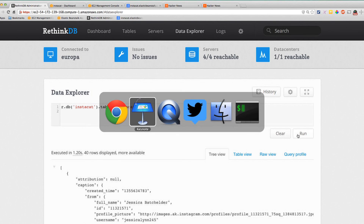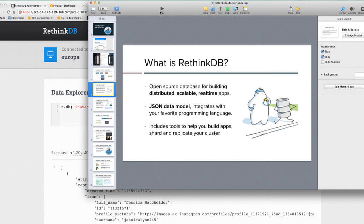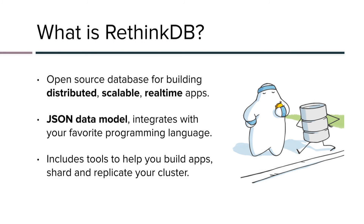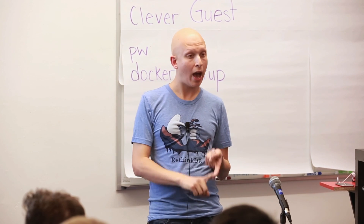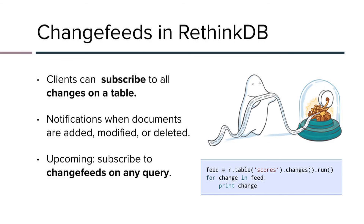The question is: what actually makes RethinkDB really well suited for real-time? The trick is that we have a feature called change feeds, which is really awesome. Change feeds let you subscribe to notifications on a table. In this example, you're tracking scores in your game — you write r.table('scores').changes(), and it sends you a stream of data, notifying you when there's an update. It tells you when things are added, modified, or deleted.